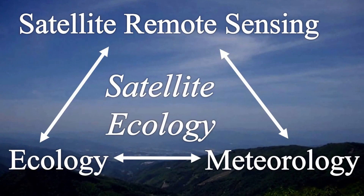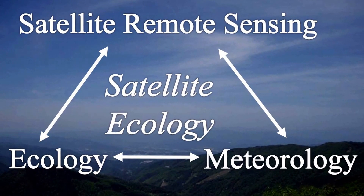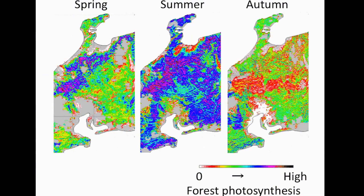By linking ecology, meteorology, and remote sensing, we established a multi-disciplinary framework called satellite ecology to study the spatial and temporal dynamics of forest ecosystems. As one of our satellite ecology studies, we can now estimate forest photosynthesis at a regional level using satellite remote sensing.